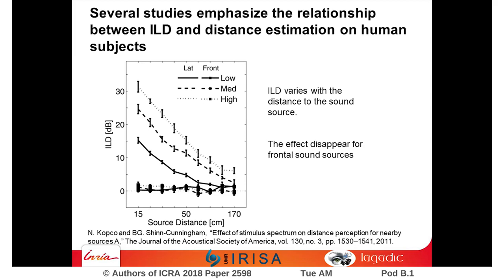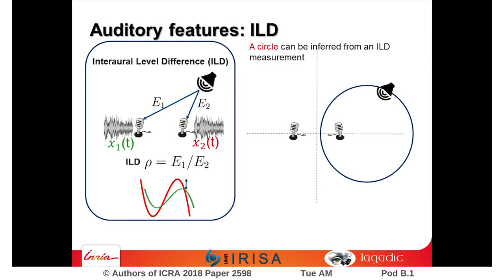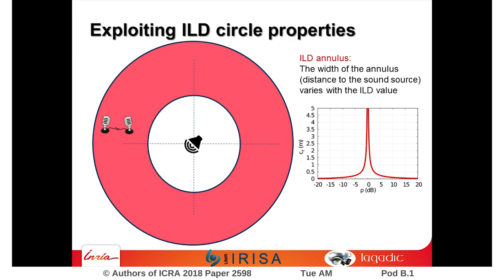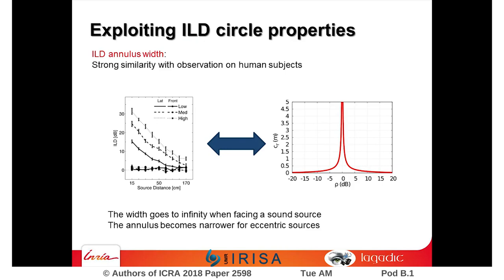Mathematically, by inferring the sound location from the ILD equation, we obtain a circle — the same ILD can be measured from any position of the sound source on this circle. With an opposite reasoning, we can characterize the area in which the same ILD can be measured for a fixed sound source. We obtain an annulus, whose width depends on the ILD value. The annulus width increases when the sound source is in front of the microphones, while it becomes narrower when the sound source is eccentric. This emphasizes the strong similarity between distance perception in human subjects and the ILD annulus variation.